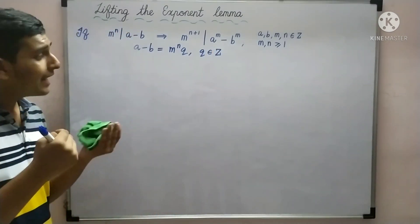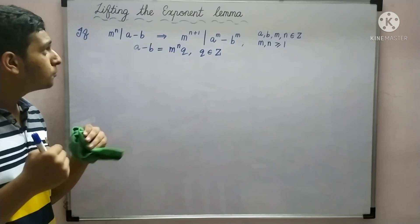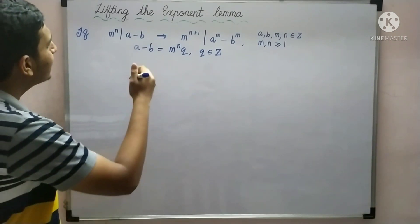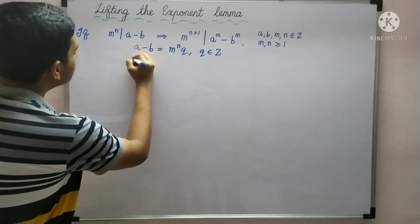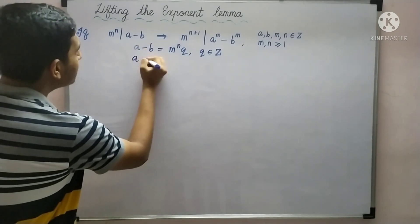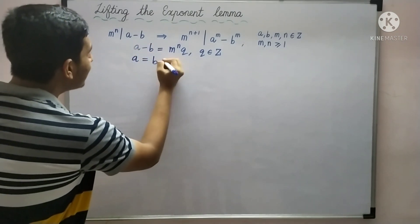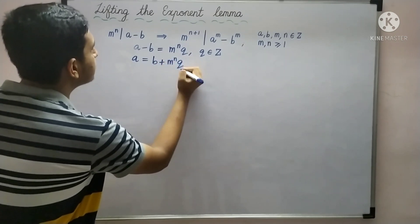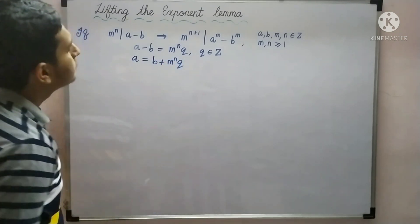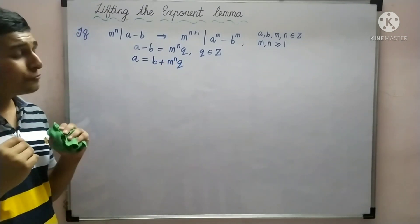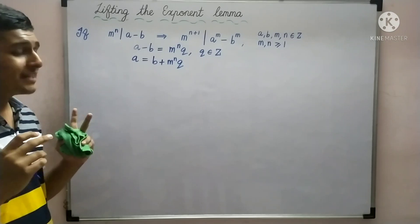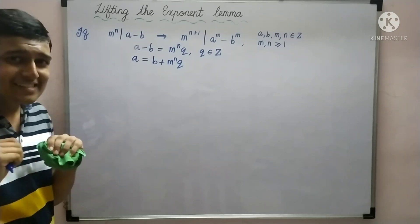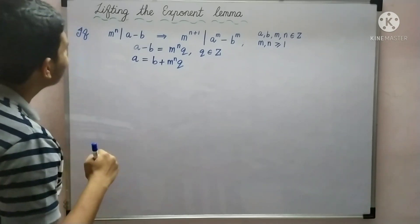If we add b to both sides of this equation, it changes to: a is equal to b plus m raised to n times q. Now, what if we raise both sides to the power of m? Let's see what happens.